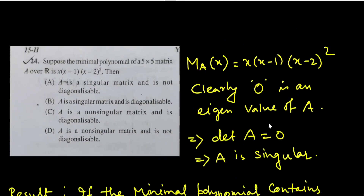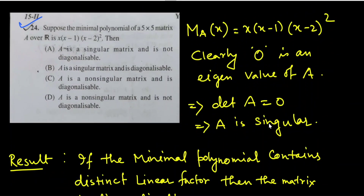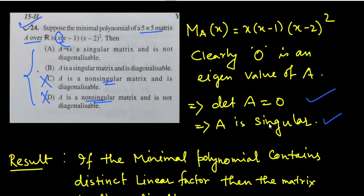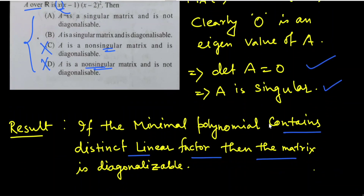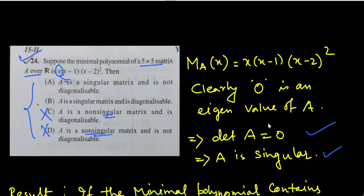The last question: the minimal polynomial of a 5×5 matrix over ℝ is x(x−1)(x−1)². Since 0 is a root, 0 is an eigenvalue, so det(A) = 0 meaning A is singular — options stating A is non-singular are immediately incorrect. Furthermore, since the minimal polynomial has a repeated factor (x−1)², the matrix is not diagonalizable. Therefore option A — singular and not diagonalizable — is correct.